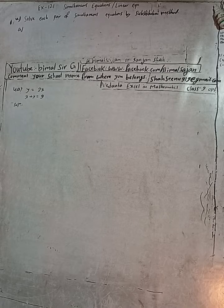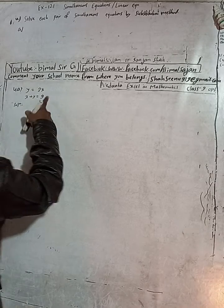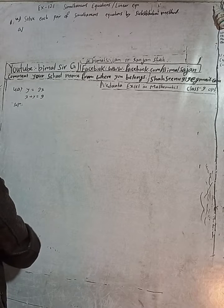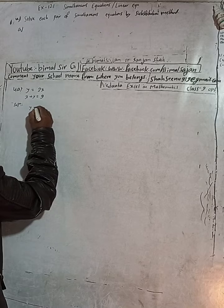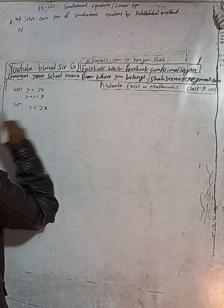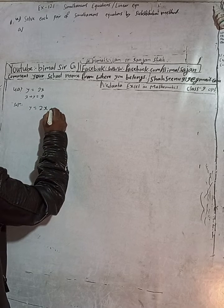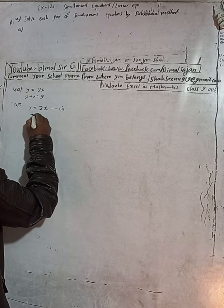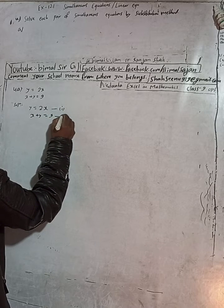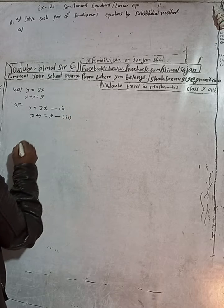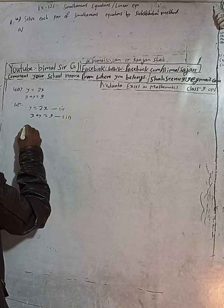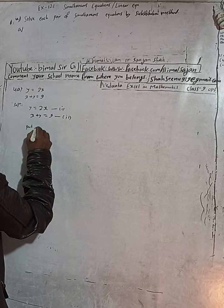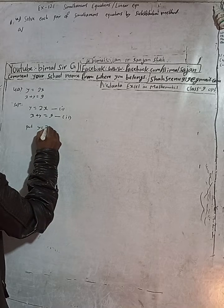Let's begin the solution for 4a. The two equations are: equation 1 — y is equal to 2x, and equation 2 — x plus y is equal to 9.